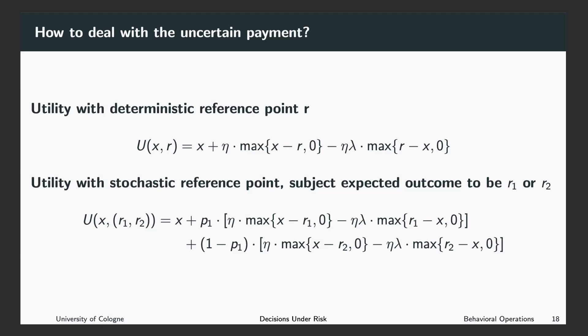Okay, so if your reference point is not deterministic but maybe stochastic, you have to anticipate the comparison. So when you're writing down your utility function you include with which probability you expected a certain outcome. So in this case you expected the payment to be r₁ with probability p₁.